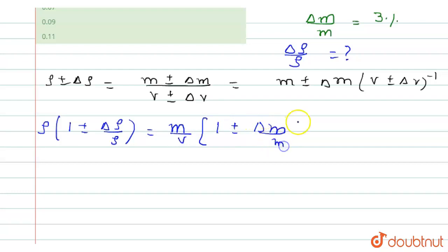So here we'll talk about plus minus del V by V raised to power minus 1. Now for the simplification, del rho by rho is equal to del m by m plus del V by V.